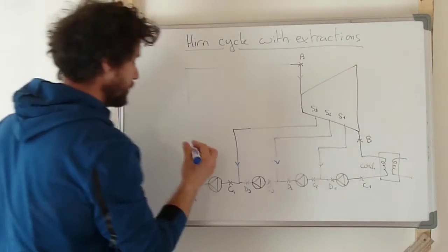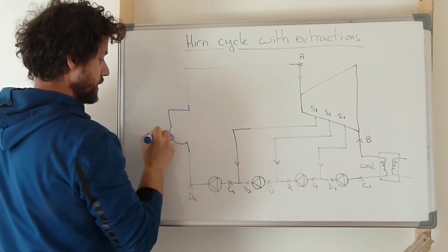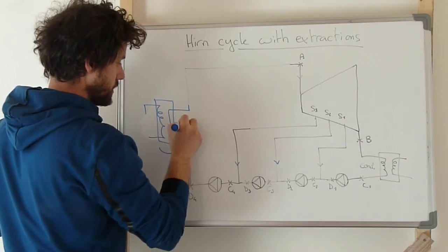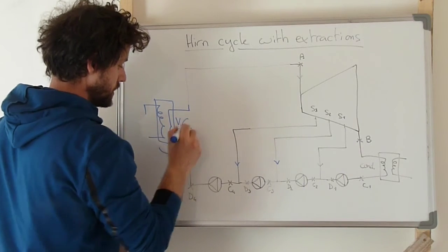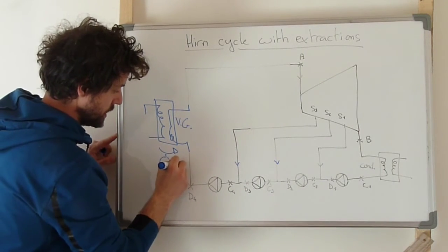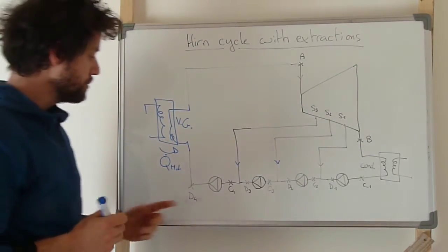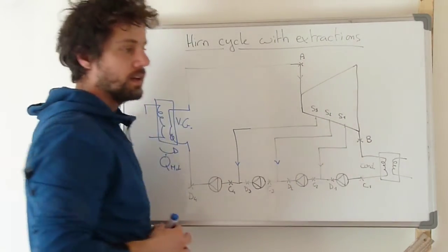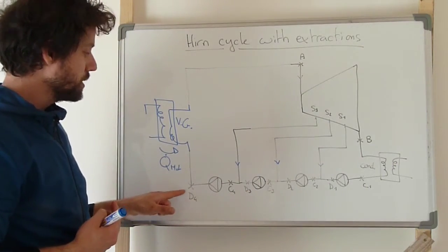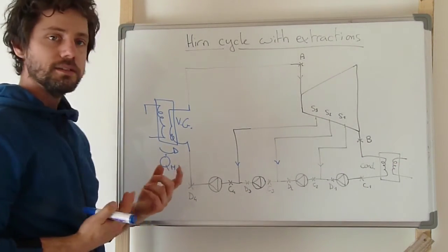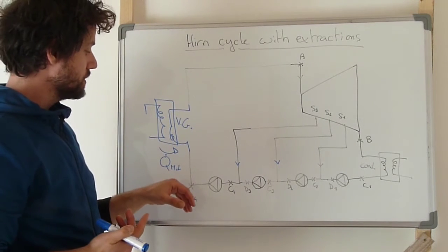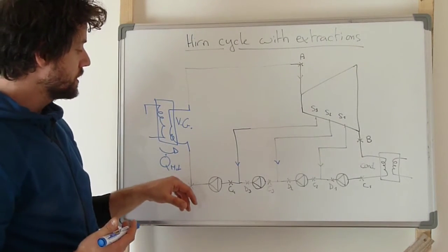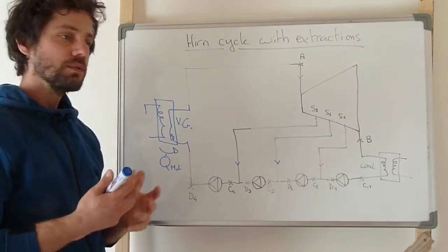D4 corresponds to the fluid that will go to the vapor generator. There is heat transfer in the vapor generator corresponding to the heat exchange with the hot source. But because the fluid has already received some enthalpy from mixing with the different extractions, there will be less heat to be received in the vapor generator in order to heat and evaporate the fluid until point A, which corresponds to the inlet of the turbine.